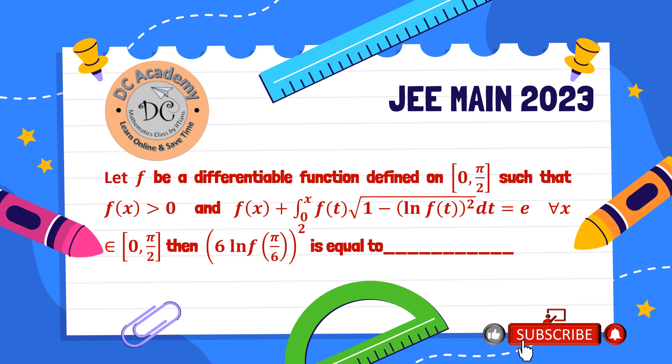Hi, in this video we're going to solve a particular problem which appeared in JEE Main 2023. Here, f is a differentiable function defined on [0, π/2] and it says that f(x) is always greater than 0 and a particular relation is provided.